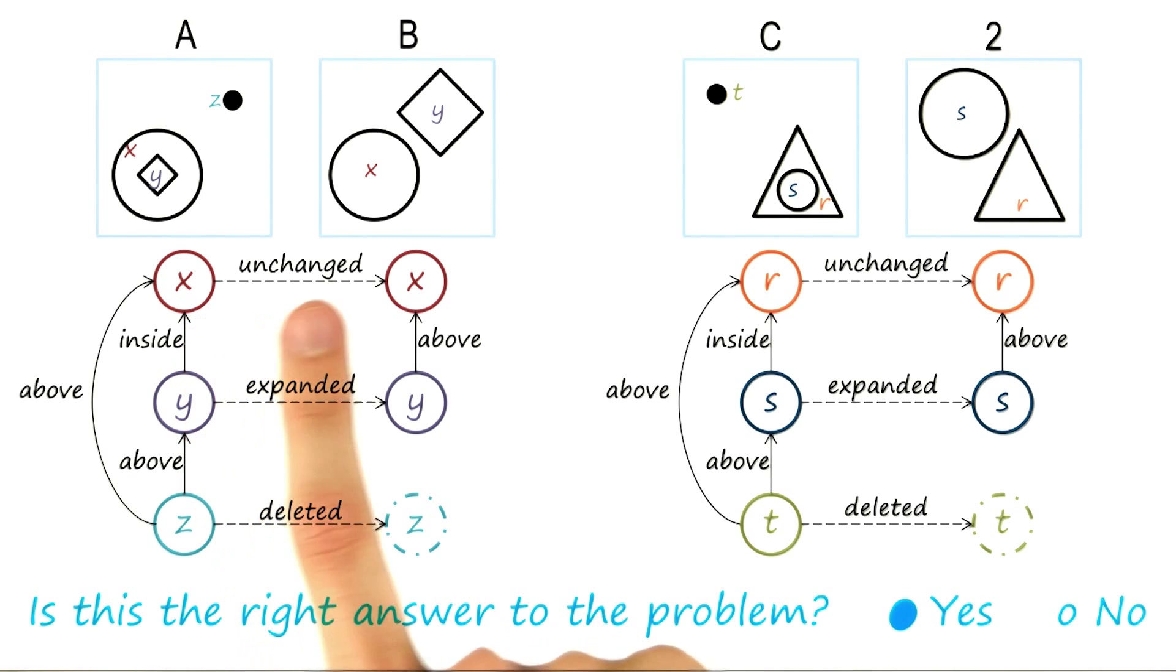We saw that x was unchanged between the two frames, just as R is. Y expanded, just as S does, and z was deleted, just as T is.